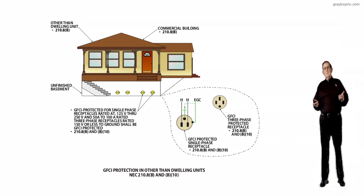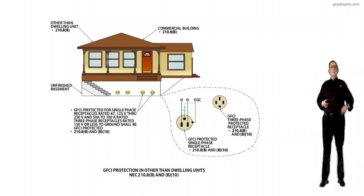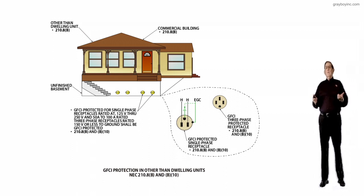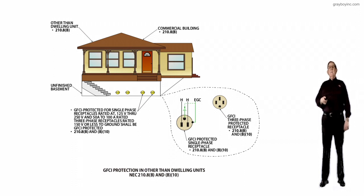And then, of course, the third requirement that I think is important has two bullets, and it's the call-out showing these receptacles in this basement. GFCI protection for single-phase receptacles rated 120-volt through 250-volts and 50-amps to 100-amp rated three-phase receptacles rated 150-volts or less to ground should be GFCI protected in accordance with the outlining requirements in 210.8B and B10.